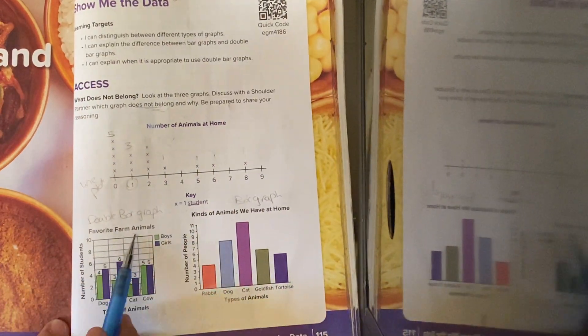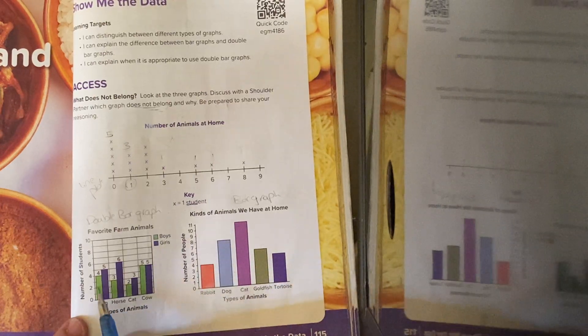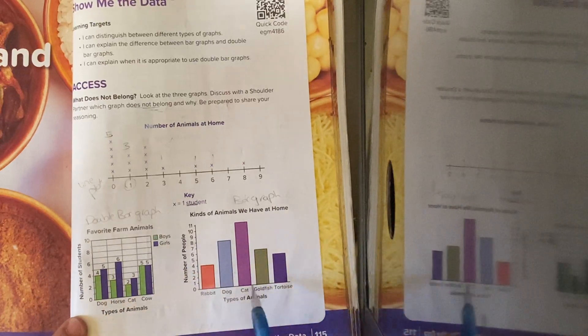Here, it's talking about favorite farm animals. The dogs, how many for the boys? 4, how many for the girls? 5, here is my key. And here, this graph,